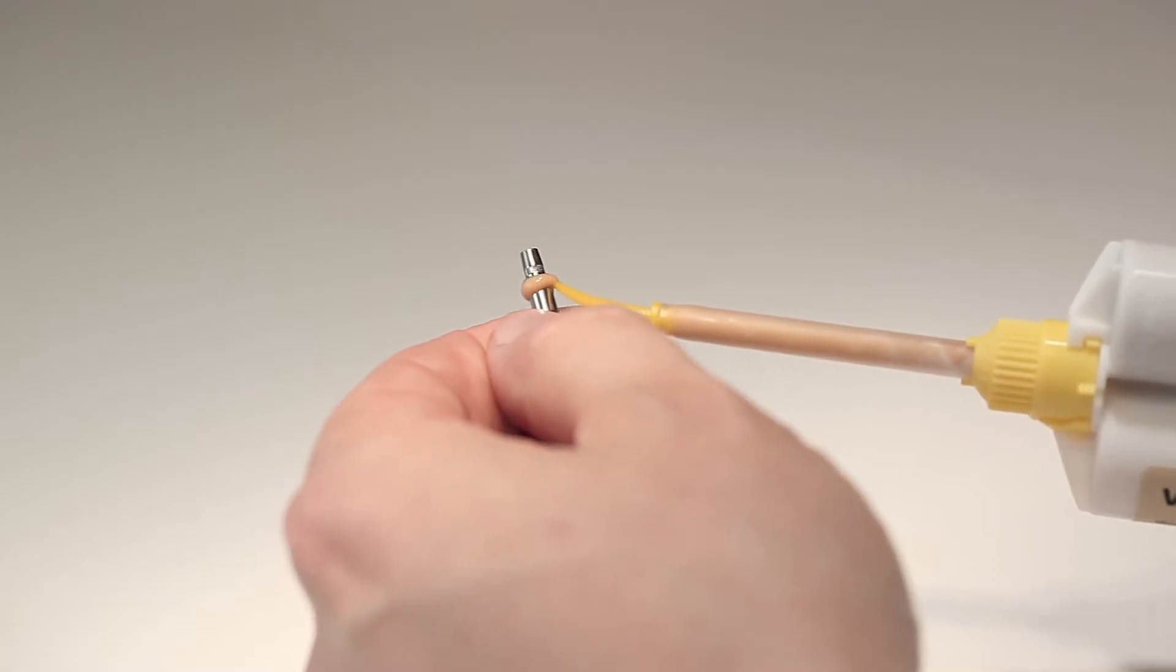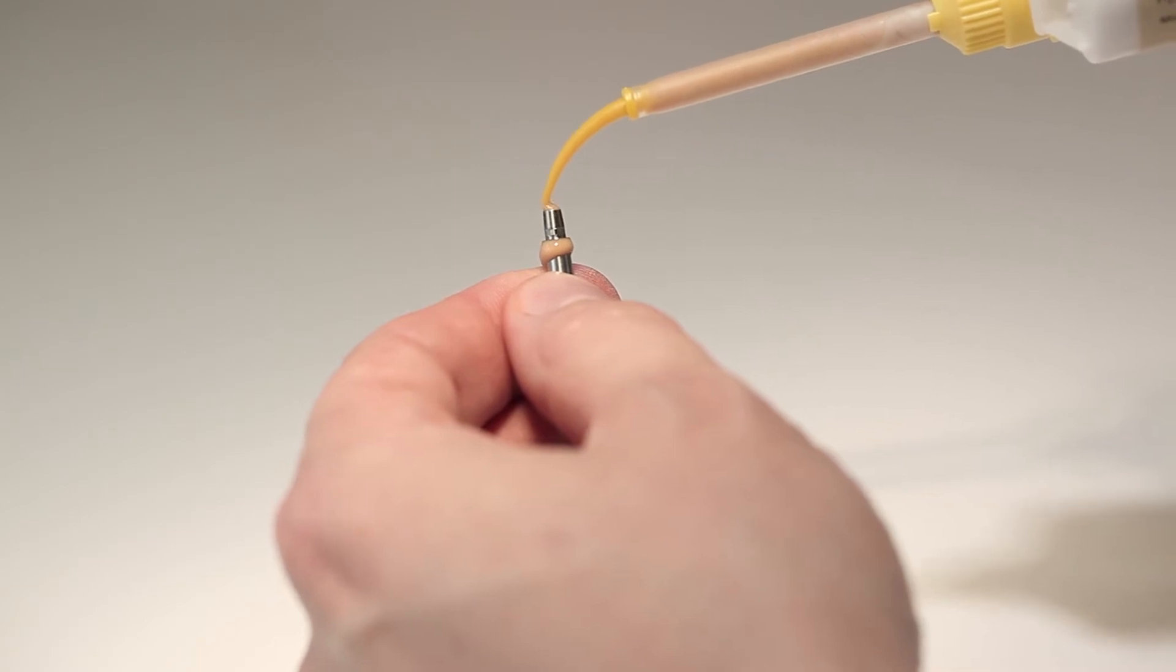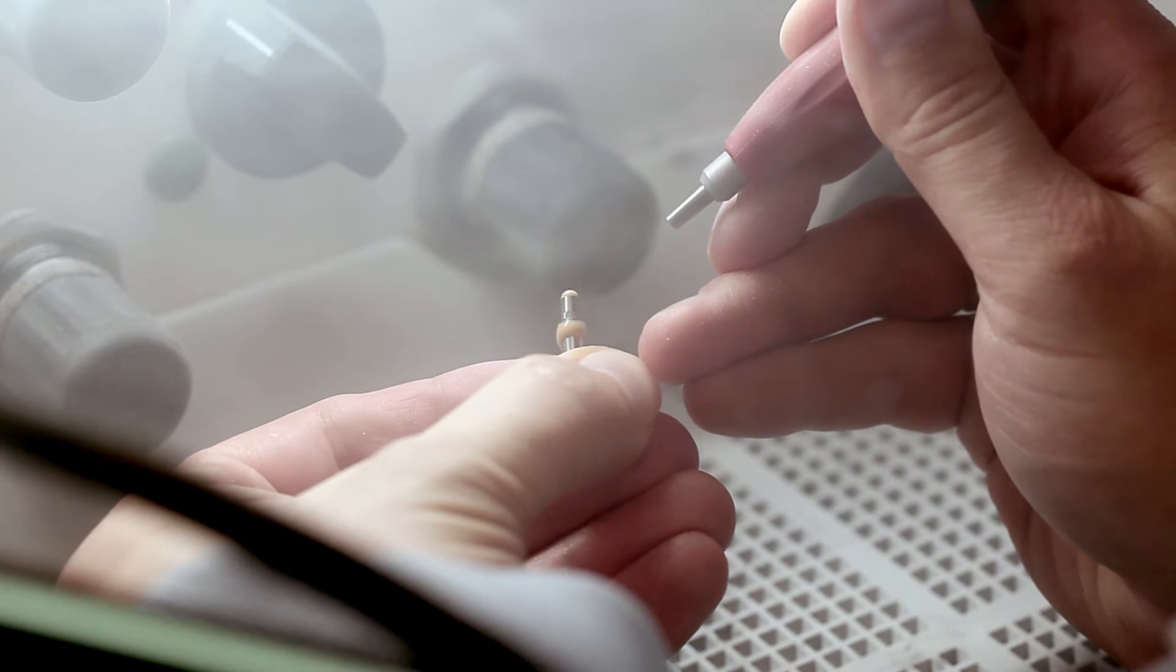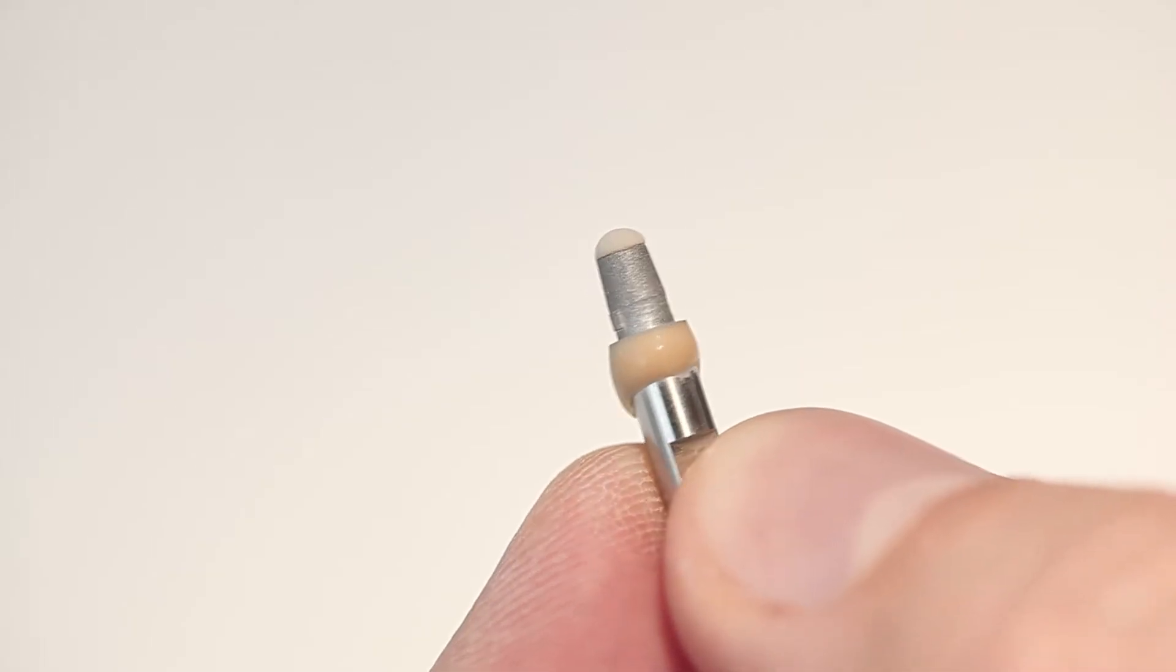The bonding surface of the tie base must be conditioned before cementation. Apply some silicone or wax to protect the emergence profile and screw channel. Blast the bonding surface of the tie base with aluminium oxide. Observe the instructions of the tie base manufacturer.